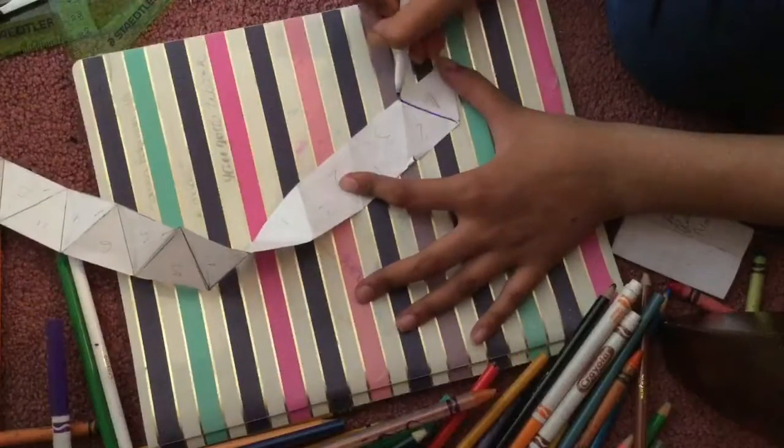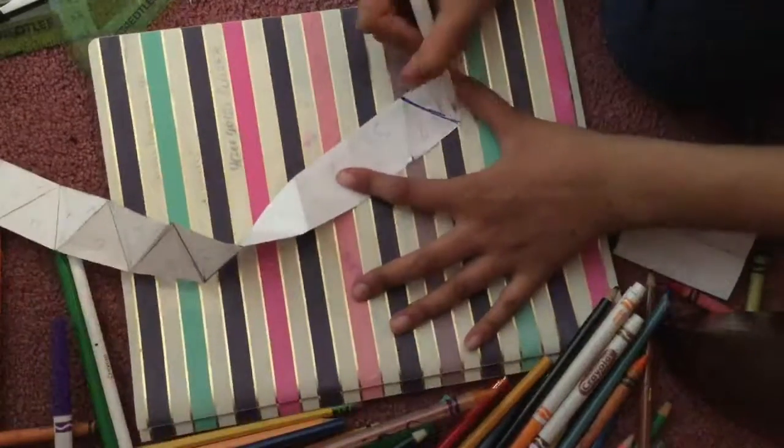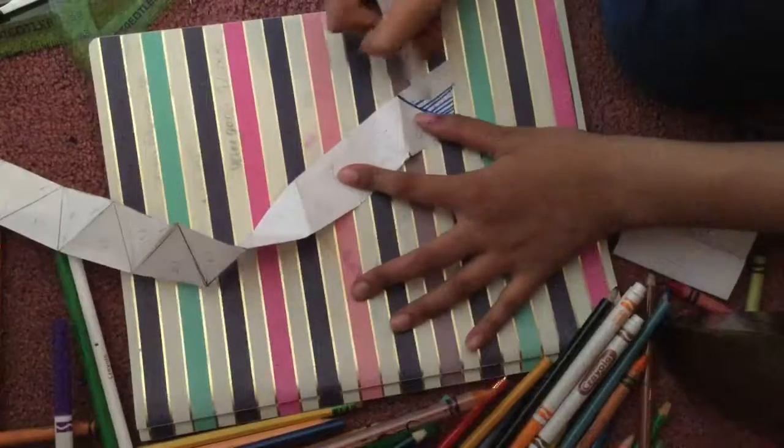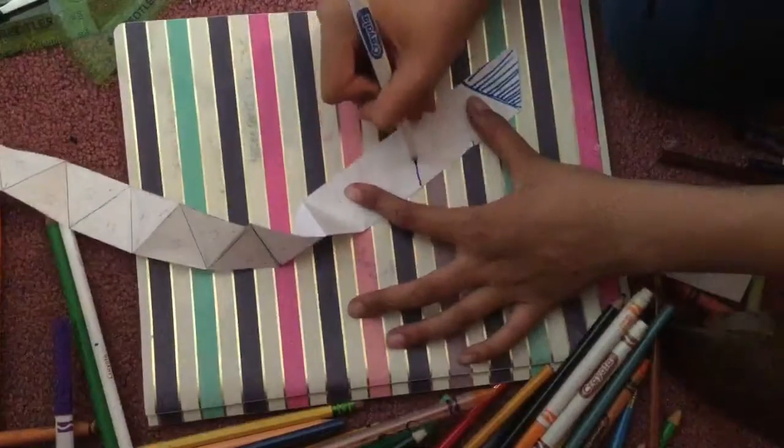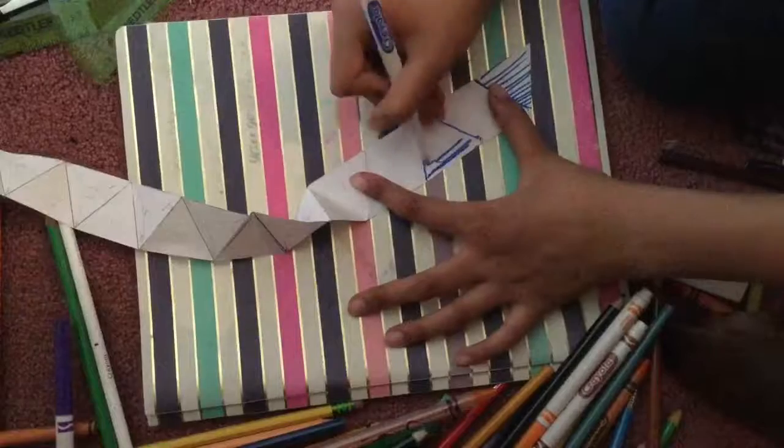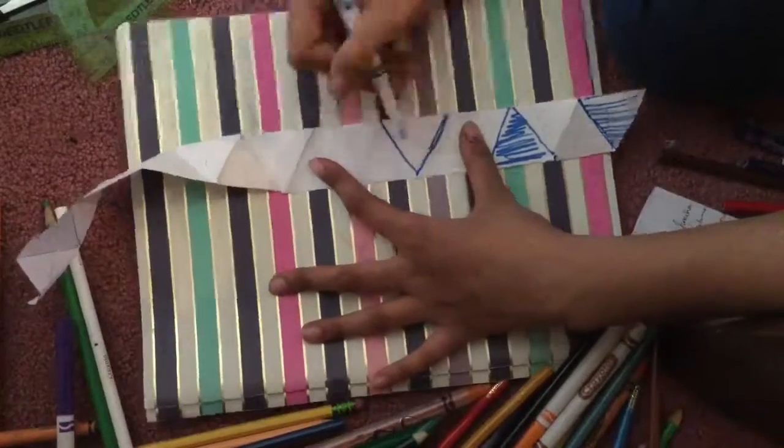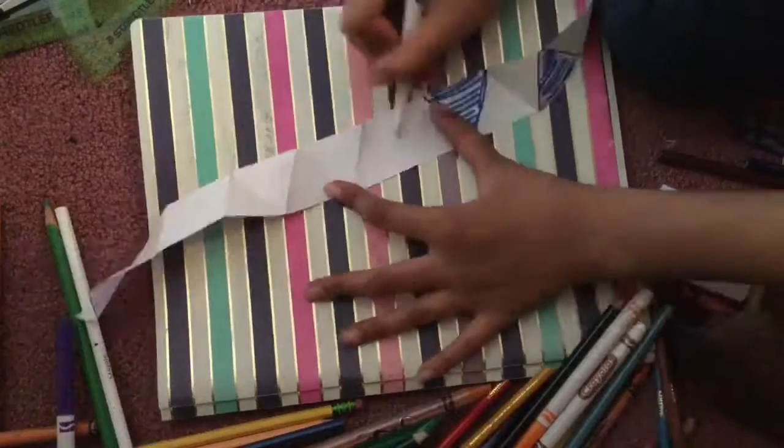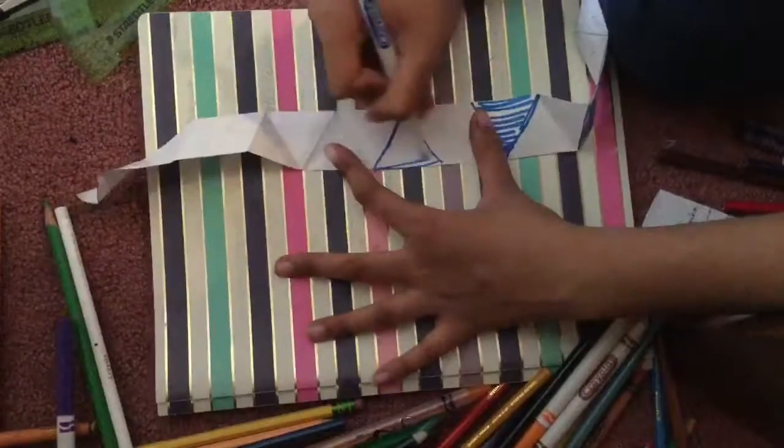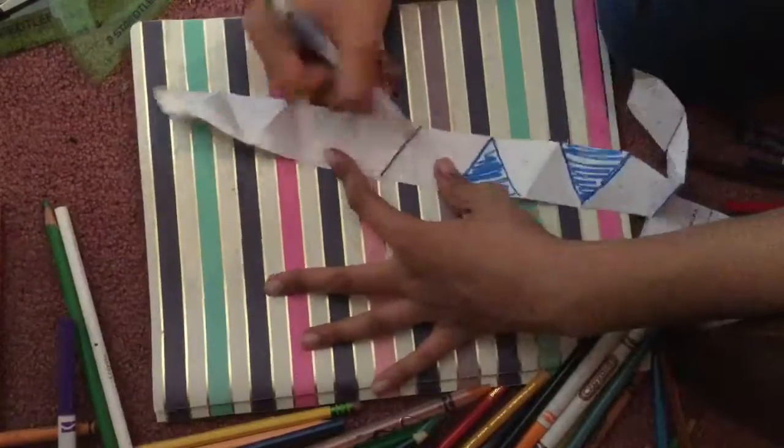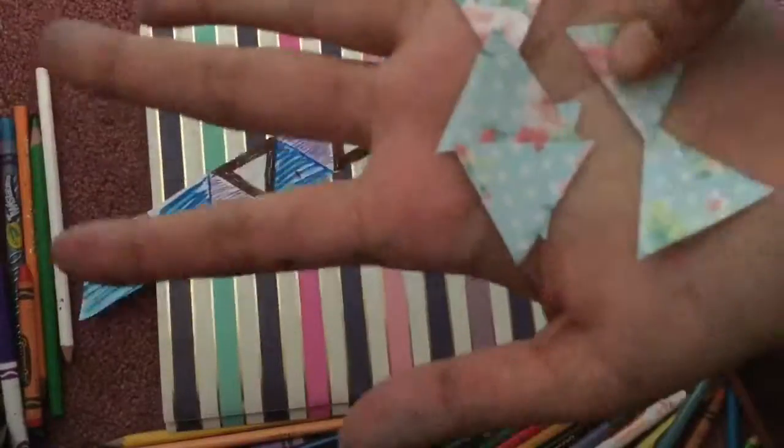Okay, here's a really important tip when decorating your hexaflexagon. Make sure if you want to do, for example, blue lines across, then you want to do it on only the same number. So let's say I want to do blue lines for one face of the hexaflexagon, I will only do that on the ones. I won't do it on the twos, because if you do it on the twos and when you go to flex, then they will be out of order.